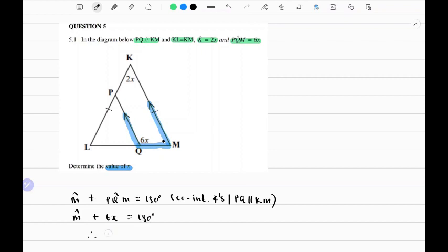Making M the subject of the formula, M equals 180 degrees minus 6X. So we can note this angle here is 180 degrees minus 6X.